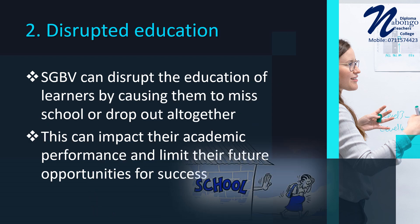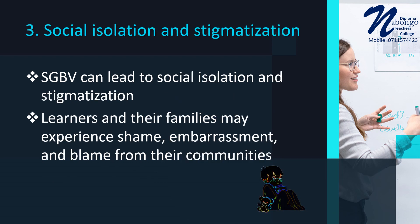Number 2 — Disrupted Education: SGBV can disrupt the education of learners by causing them to miss school or drop out altogether, impacting their academic performance and limiting their future opportunities for success. Number 3 — Social Isolation and Stigmatization: SGBV can lead to social isolation and stigmatization, with learners and their families experiencing shame, embarrassment, and blame from their communities, further impacting their mental health and well-being.